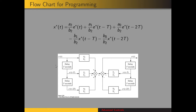Now here is a flowchart — an example of a flowchart you could use for programming this compensator. The input is the sampled-time error, multiplied by A2 over B2. To that we add the sampled-time error from one sampling period previous multiplied by A1 over B2, plus the error from two sampling periods ago multiplied by A0 over B2. All of those terms are added to delayed values for the output: the output from one sampling period ago multiplied by B1 over B2, minus the output from two sampling periods ago multiplied by B0 over B2.